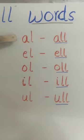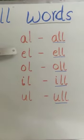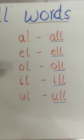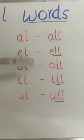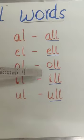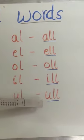Like A and L, it becomes all. E and L, it becomes ell. O and L, it will be oll. I and L, ill. U and L, ull.